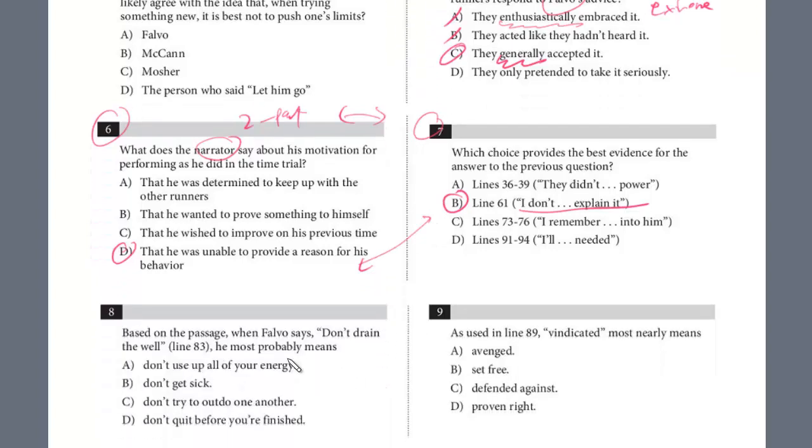Let's take a look at question eight. Based on the passage, when Falvo says, don't drain the well, in line 83, he probably means what? I don't think we have to refer back. After answering this question, you get a better idea. When he says, don't drain the well, we know this was the advice he gave to the group but also to Mosier specifically. It's don't drain your energy. Don't use up all your energy. It's not don't get sick. Don't drain the well means just leave something in the tank. Don't try to undo one another - this might be indirectly implied, but specifically what it means is don't use up your energy. Don't quit before you're finished - definitely not true. So eight is A.